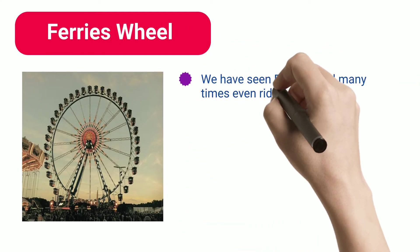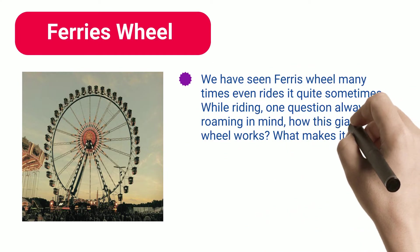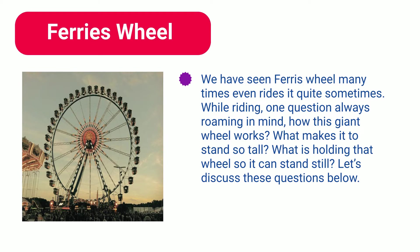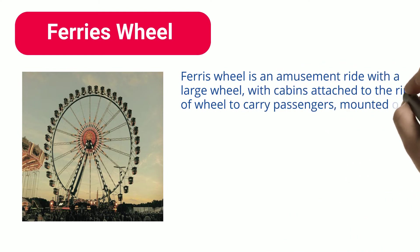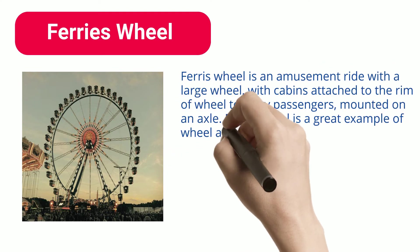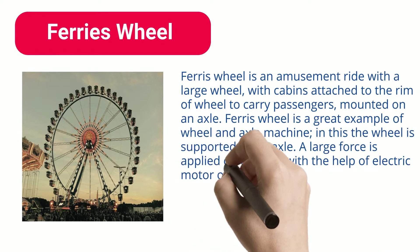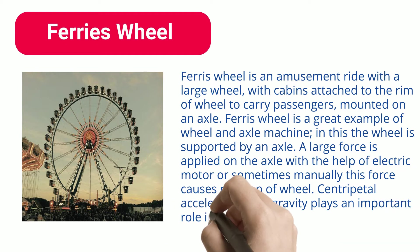Ferris Wheel. We have seen a Ferris wheel many times and even ridden it quite sometimes. While riding, one question always comes to mind: how does this giant wheel work? What makes it stand so tall, and what is holding that wheel so it can stand still? A Ferris wheel is an amusement ride with a large wheel, with cabins attached to the rim of the wheel to carry passengers, mounted on an axle. A large force is applied on the axle with the help of an electric motor, or sometimes manually, and this force causes rotation of the wheel. Centripetal acceleration and gravity play an important role in maintaining the stability of the passengers.